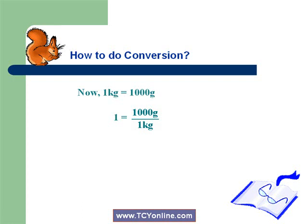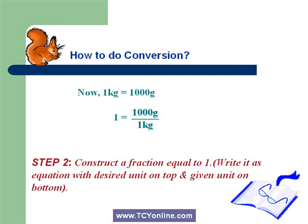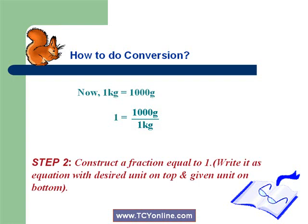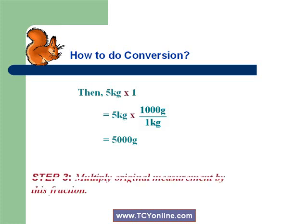So we get 1 equals 1000 grams over 1 kg. Now to find the number of grams in 5 kilograms, we simply multiply this fraction by 5. So finally we reach 5000 grams. That means there are 5000 grams in 5 kilograms.